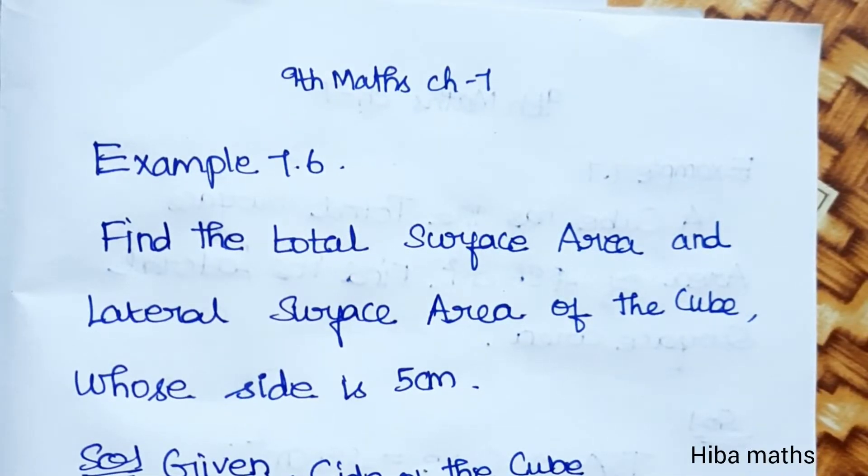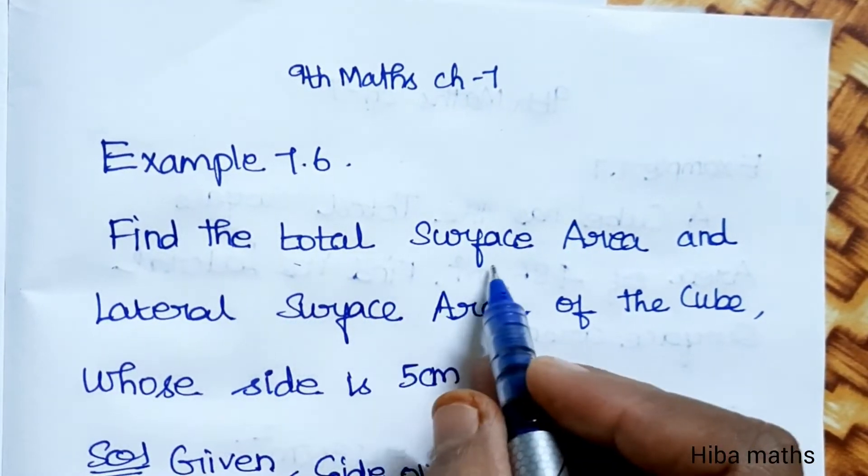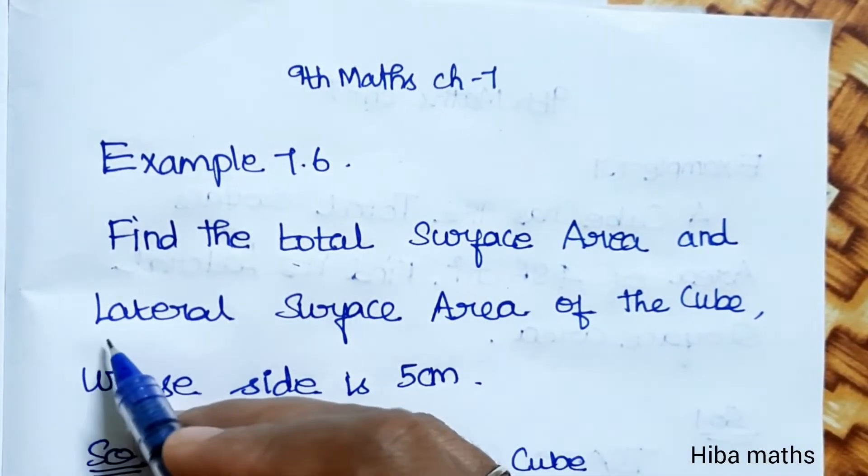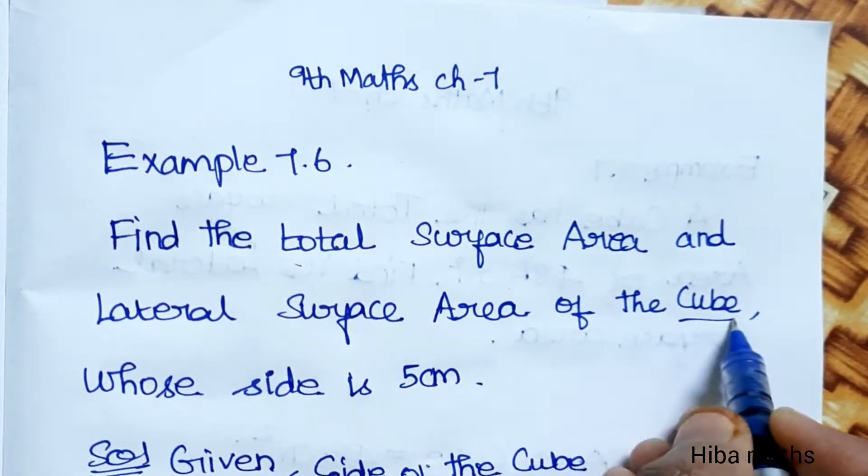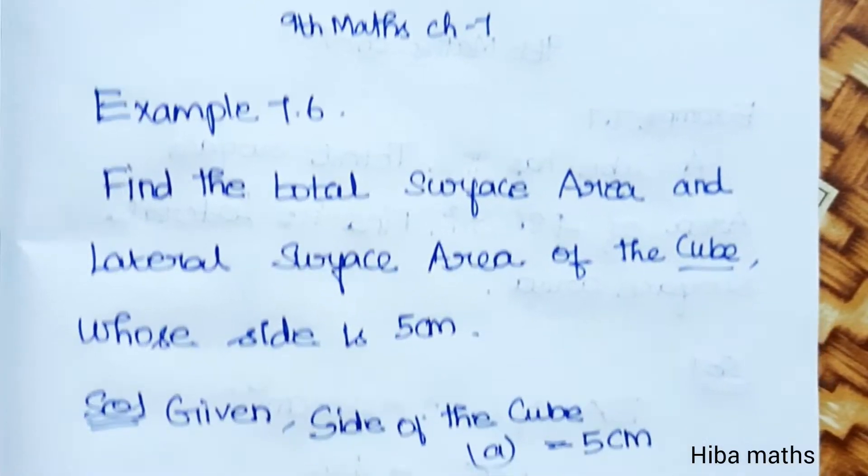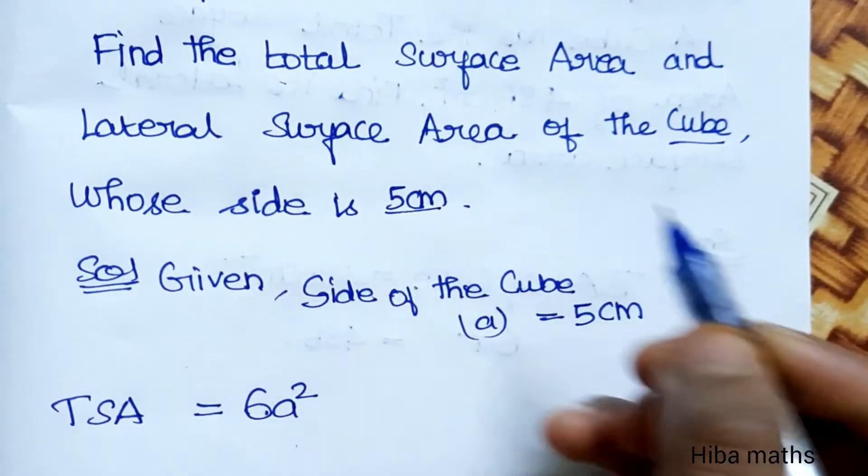Hello students, welcome to Hiba Maths, 9th Standard Maths Chapter 7, Example 7.6. Find the total surface area and lateral surface area of a cube whose side is 5cm.